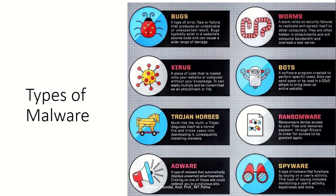Types of malware include bugs, worms, viruses, bots, trojan horses, ransomware, adware, and spyware. All of them are malicious pieces of code — the name reflects their nature. A worm can travel itself from one system to another over the network. A virus replicates itself within a single system and does not move itself over the network to other systems.